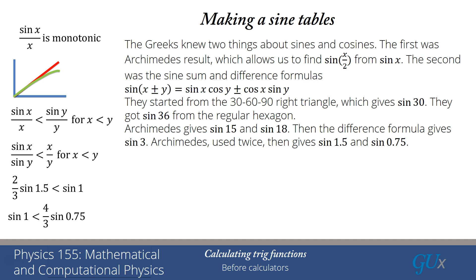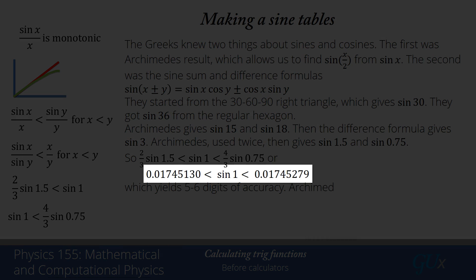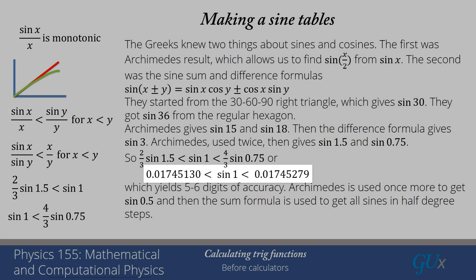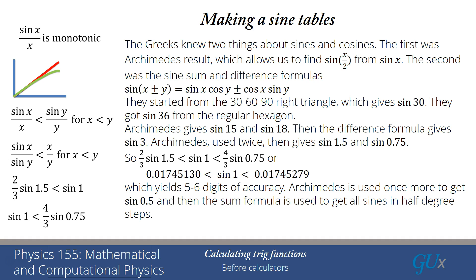Okay, so we have learned these two identities, that brackets sine 1 in between two values, and I can actually evaluate those values because I already got them. And what you find is 0.01745130 is less than sine 1 is less than 0.01745279. This is going to give me sine 1 to 5 to 6 digits of accuracy.